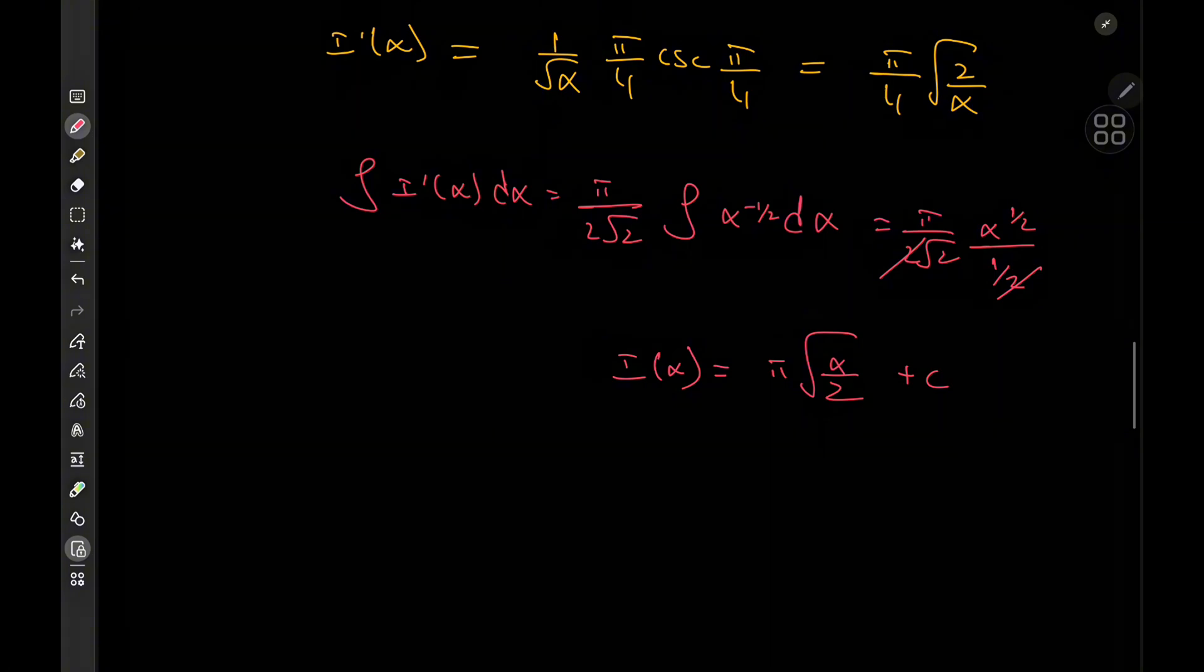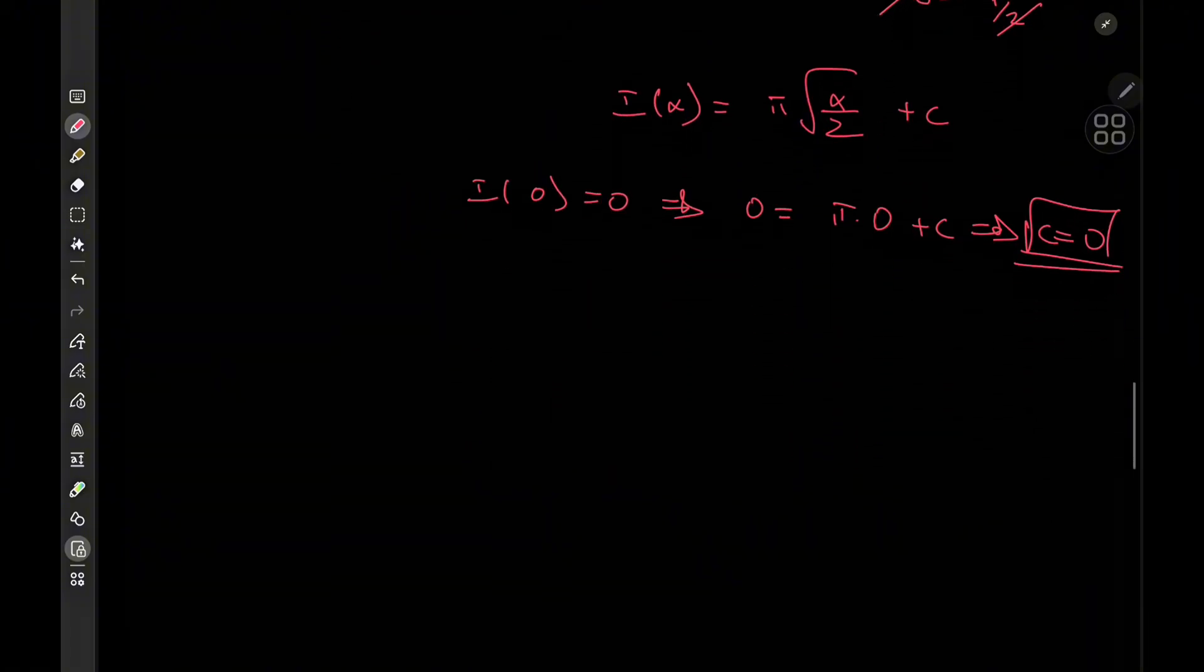And this constant is pretty easy to evaluate as well, since alpha equal to zero implies that I of alpha is equal to zero, or I could just write this in one line, I of zero is equal to zero implies that zero is equal to pi times zero plus c. In other words, the constant of integration is indeed a big bad zero. Again, quite convenient. So this implies that I of alpha, my friends, is pi times root alpha over 2.